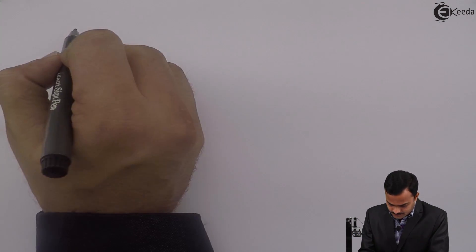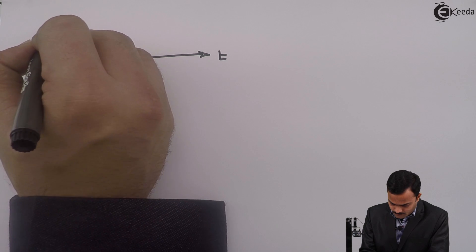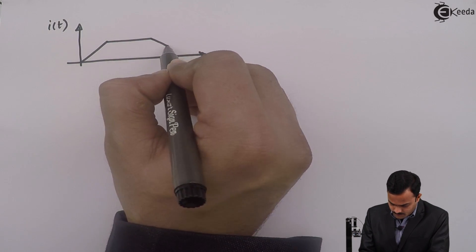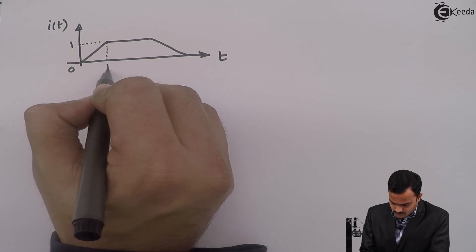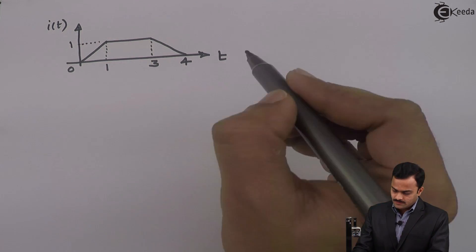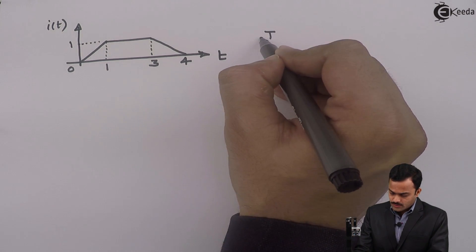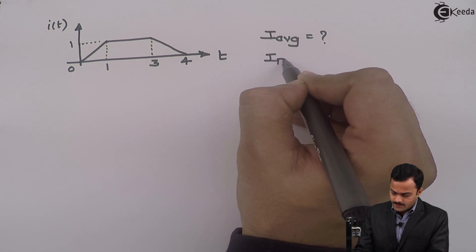Hi friends, in this video we are going to see how to calculate average and RMS value of a trapezoidal waveform. This is the waveform I have considered, for which we are supposed to calculate the average value and RMS value.